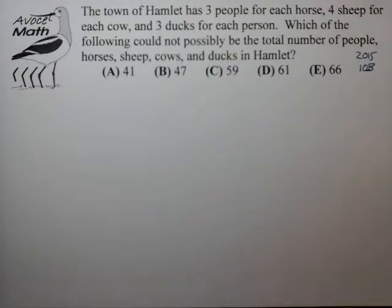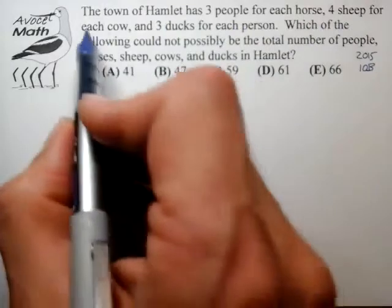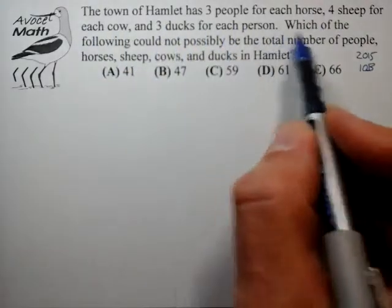And it's a good problem because it involves a lot of different problem solving skills that will come in handy in various other problems. So let's take a look at what we have. We have the town of Hamlet has three people for each horse, four sheep for each cow, three ducks for each person.